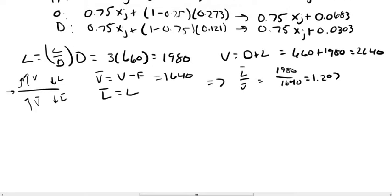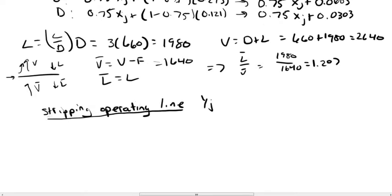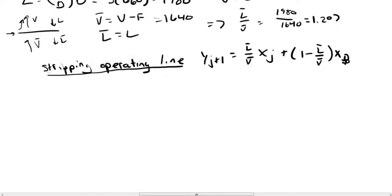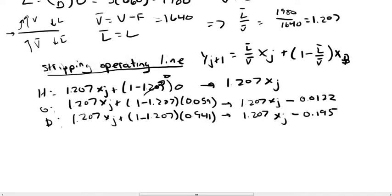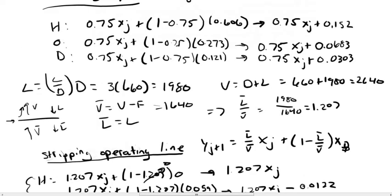Now we build the stripping operating lines, given by y_{j+1} = (L̄/V̄)·x_j − (L̄/V̄ − 1)·x_b. For heptane, this is 1.207·x_j − 1.207 × 0, since heptane's bottoms fraction is zero; that entire term drops out and you just get 1.207·x_j. The same is done for octane and decane. These two sets of equations—enriching and stripping—are your governing equations controlling concentration throughout the column per stage.